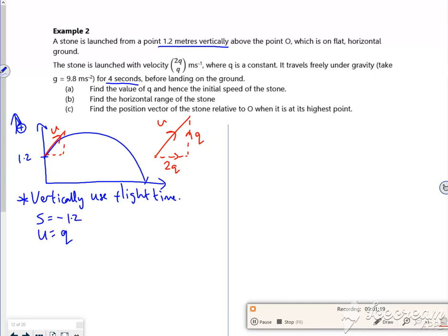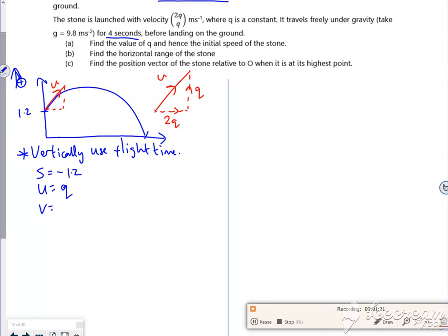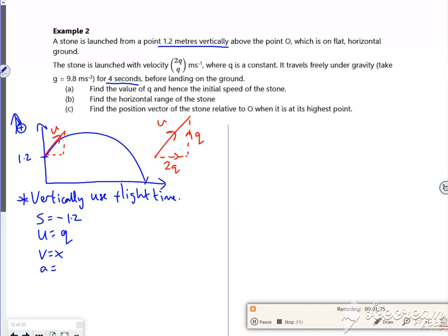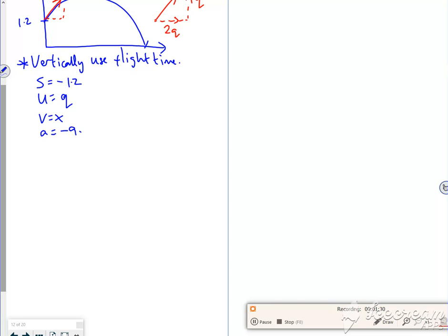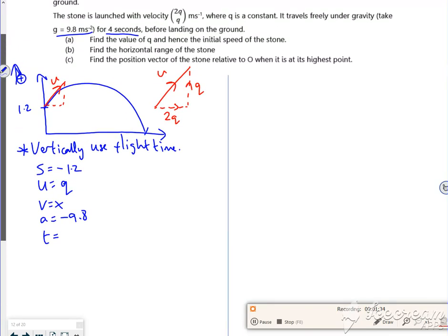u is q, v not fussed about, a is, I remember acceleration's pointing down but we're going up, a is 9.8, so that's going to be minus 9.8, and t, did we get told it was 4, well 4 seconds it is.